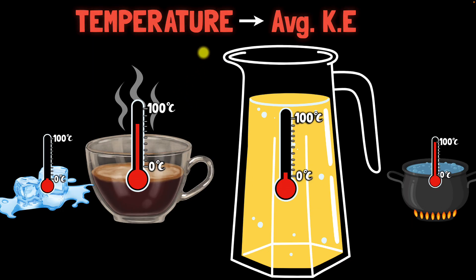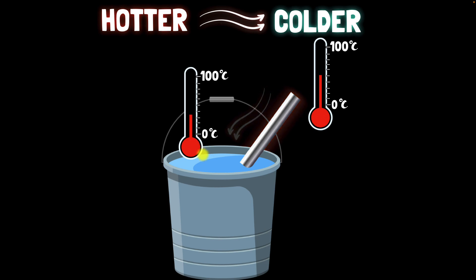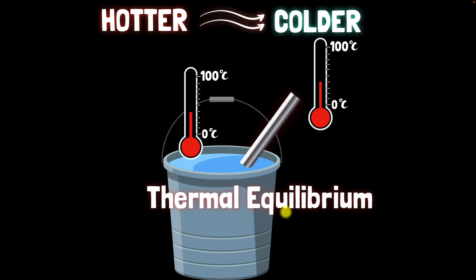Now we're ready to understand what heat is. If you keep a hotter system in contact with a colder system, energy flows from the hotter system to the colder system. For example, if you take a very hot rod and dip it in water at a lower temperature, energy gets transferred from the hotter rod to the colder water. This happens until the temperature equalizes — in other words, until we reach thermal equilibrium, which means the two systems have the same temperature. The energy that flows from a hotter system to the colder system until thermal equilibrium is reached — that is what we call heat.